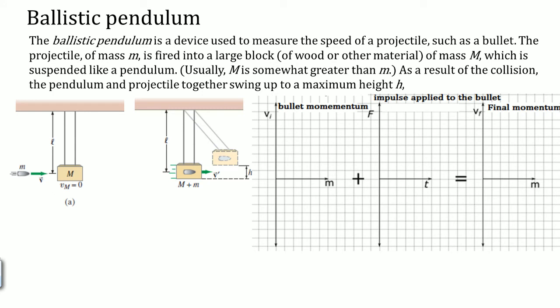Let's look at the momentum. When the bullet comes in it has a certain momentum. Let's say this is a momentum of 8 units. Now there's going to be an impulse — a change — and then a final momentum of this object.